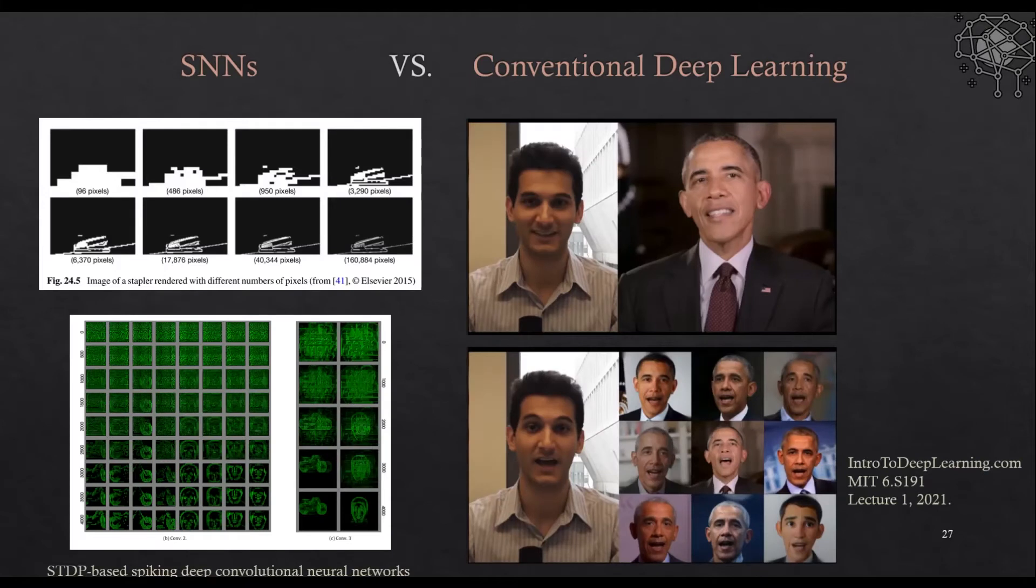For example, here I compared the spiking neural networks with some conventional deep learning. In the left side you can see these pixels that represent a picture, they're just some pixels of some neurons. But in the right side we have a few pictures of Obama and someone is talking in a speech, and that picture is just artificially made from that, the audio synthesis speech. You can see this in the first lecture of the introduction to deep learning from the MIT. It's really cool.